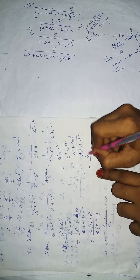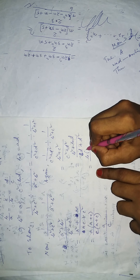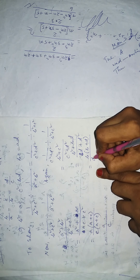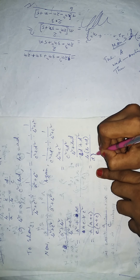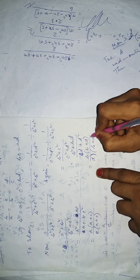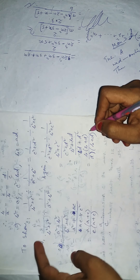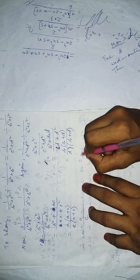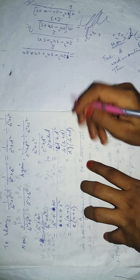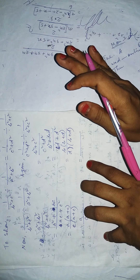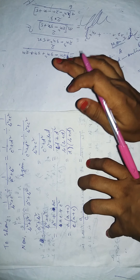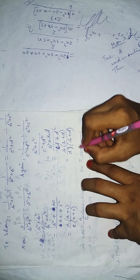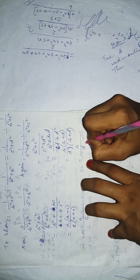Now take common: b in the numerator and d in the denominator. Take (b+d) common — after (b+d) gets cancelled from numerator and denominator, we are left with b/d.